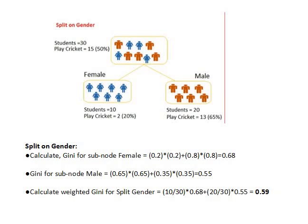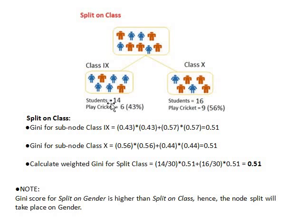Now for the second variable, class (9th and 10th). There are 14 students in class 9 and 16 in class 10. For class 9, 6 out of 14 play cricket, so p = 0.43, giving Gini = 0.51. For class 10, we also get Gini = 0.51. The weighted Gini for the class split is: (14/30) × 0.51 + (16/30) × 0.51 = 0.51.